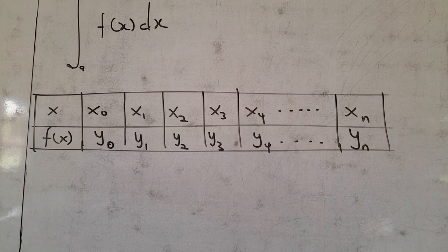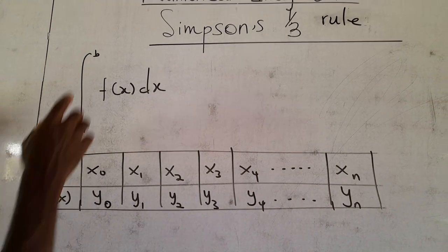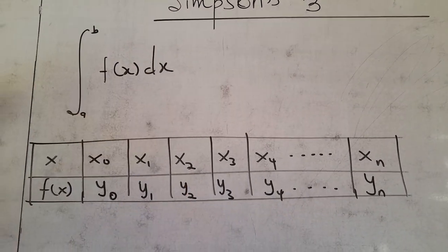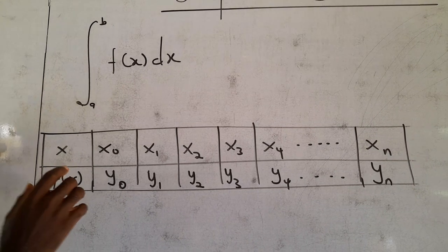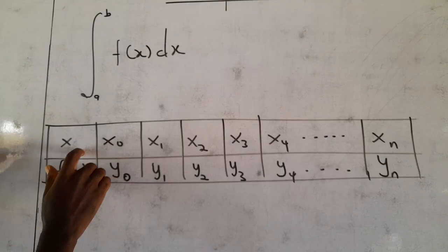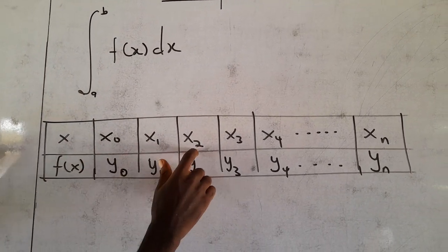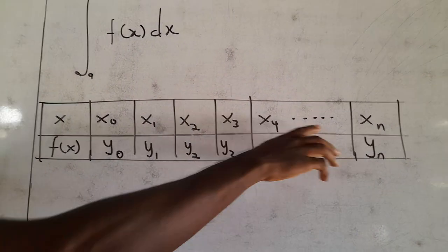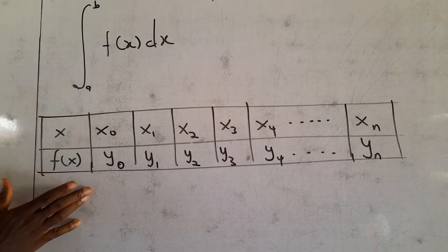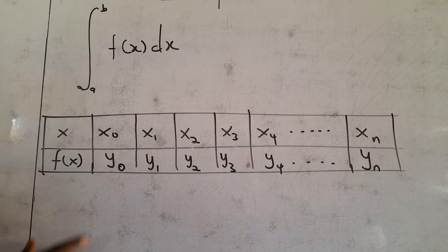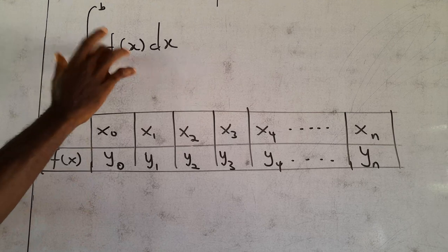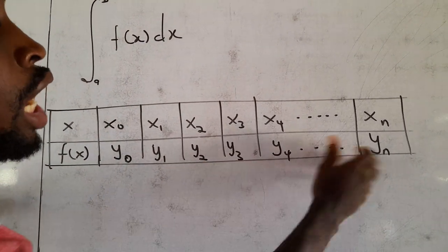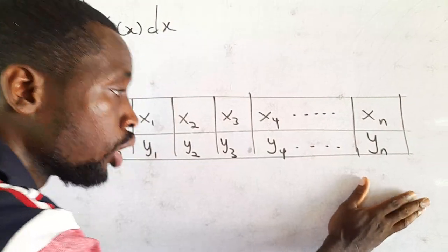With Simpson's 1/3 rule, if we are asked to evaluate the integral from A to B of the function f(x) dx, having gotten the values of x to be x₀, x₁, x₂, x₃, x₄ up to the last value xₙ, and substituting the x values into the function f(x), we get y₀, y₁, y₂, y₃, y₄ up to the last value yₙ.